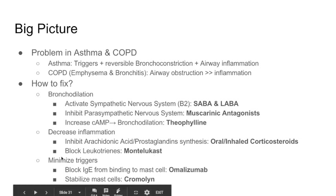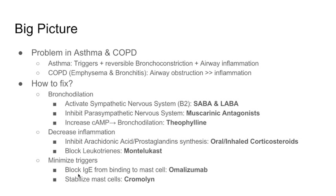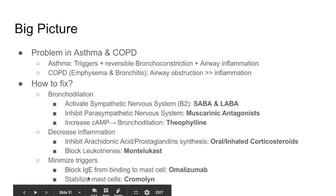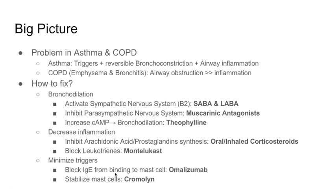So that's really the big picture: bronchodilation, decreasing inflammation, and minimizing triggers. The first class of drugs is the beta agonists, divided into short-acting (SABA) and long-acting (LABA) based on half-life. Beta-2 receptors are in the lungs — remember, beta-1 is in the heart (one heart), beta-2 is in the lungs (two lungs). The prototype for the short-acting beta agonist is albuterol, which is a beta-2 agonist that relaxes bronchial smooth muscle, leading to bronchodilation.